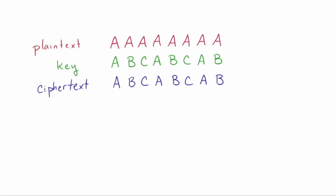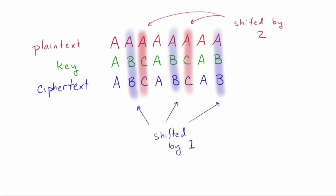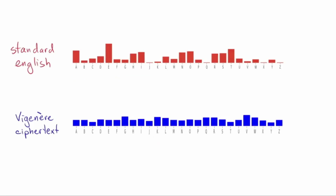Now, Vigenère appears to fix this problem because the shifts vary. So even a regular cipher text like AAAA will end up having different letters in the output because each A is shifted by a different amount. So with key ABC, some are shifted by one, some by two, some by none. Remember how the same letters can encrypt differently. Here is a frequency chart for English letters in red versus a frequency chart for an example Vigenère cipher text in blue. The Vigenère distribution is much more uniform — the frequencies have been all jumbled and evened out. A naive frequency analysis like for Caesar cipher just won't work. However, we can still use frequency analysis in our attack.